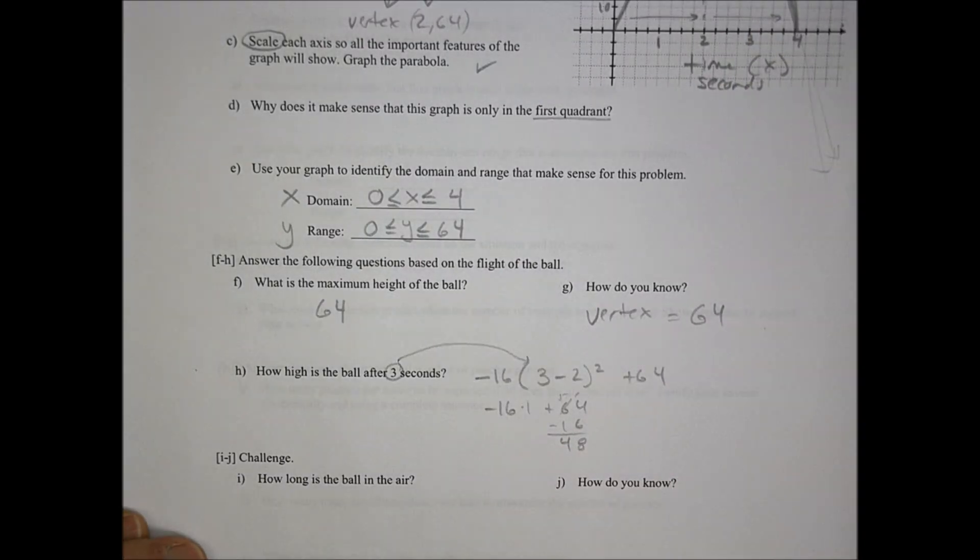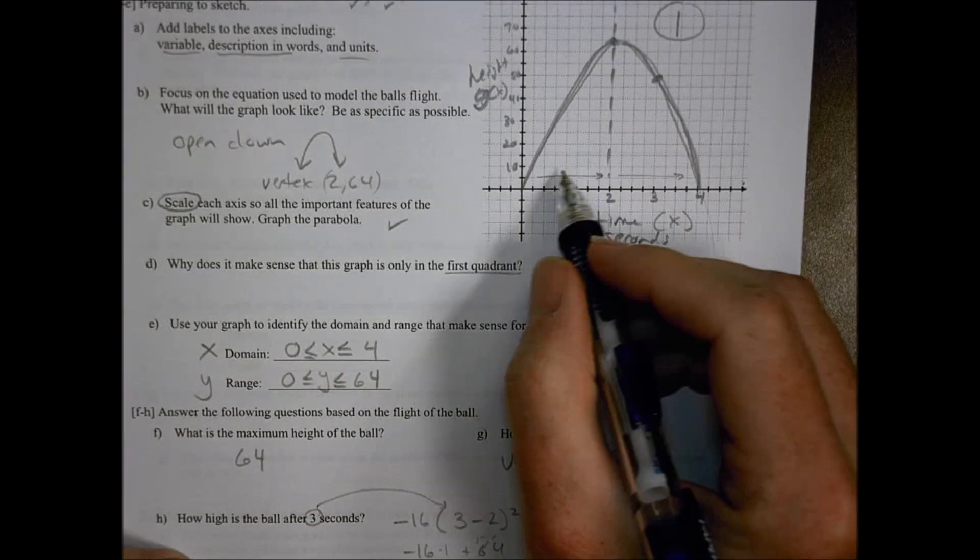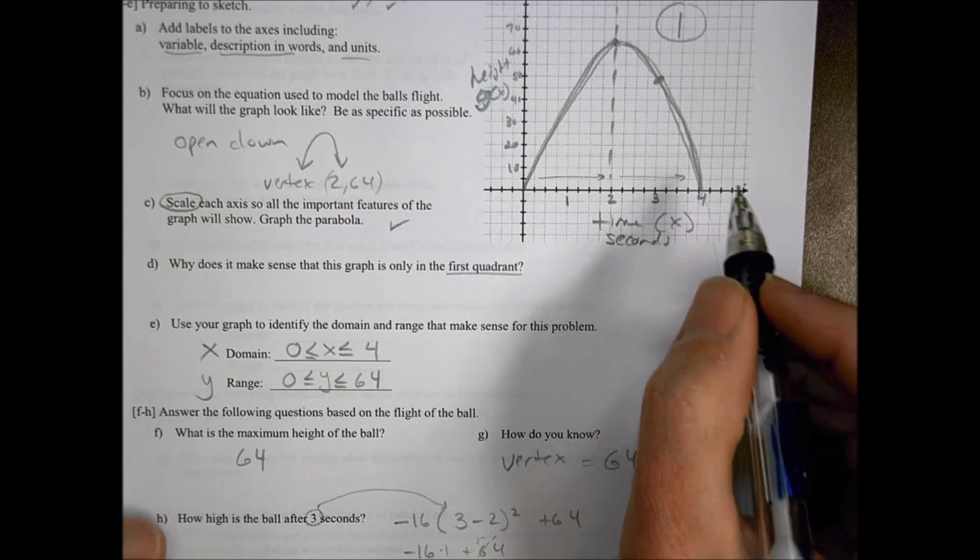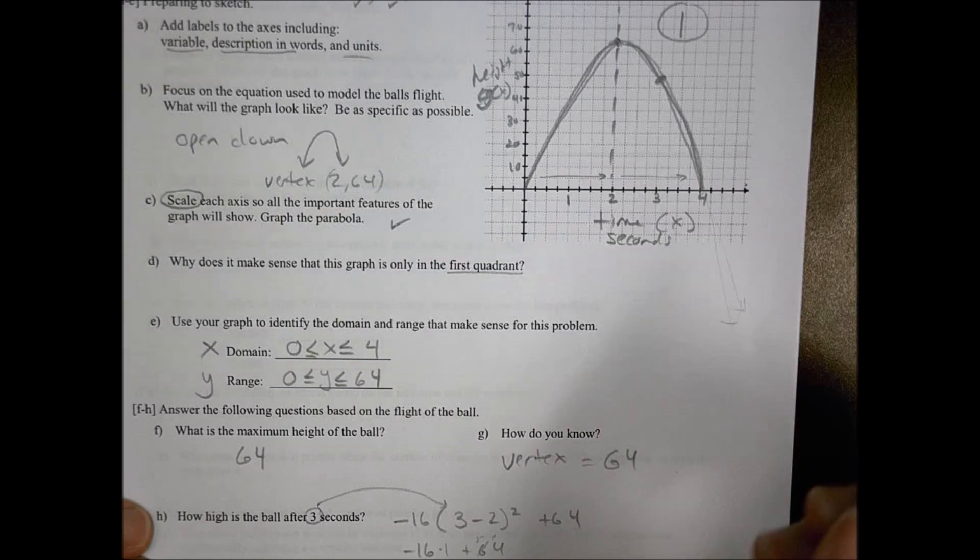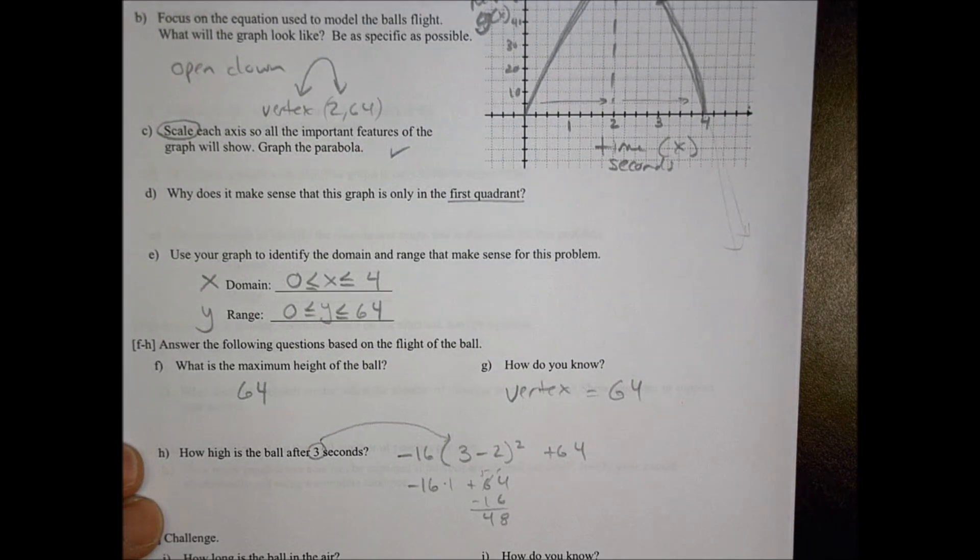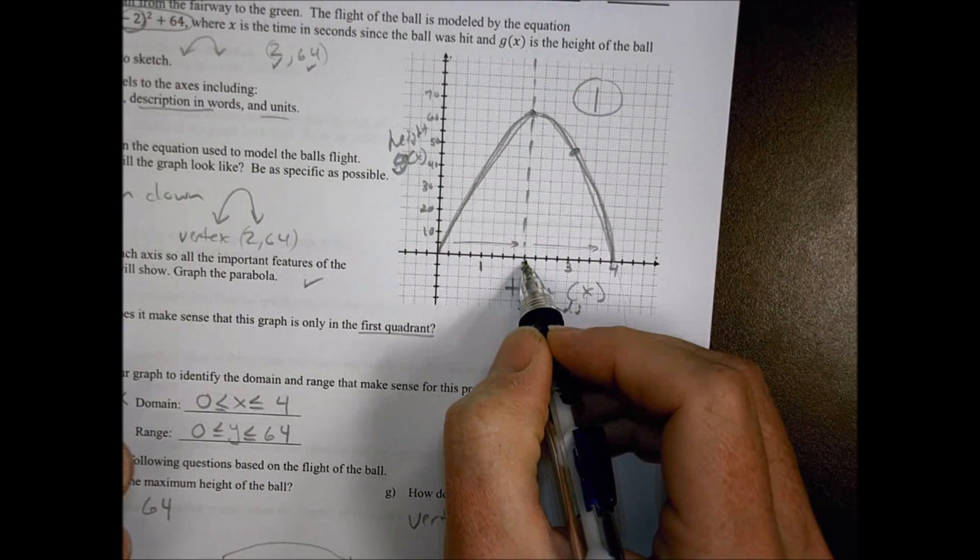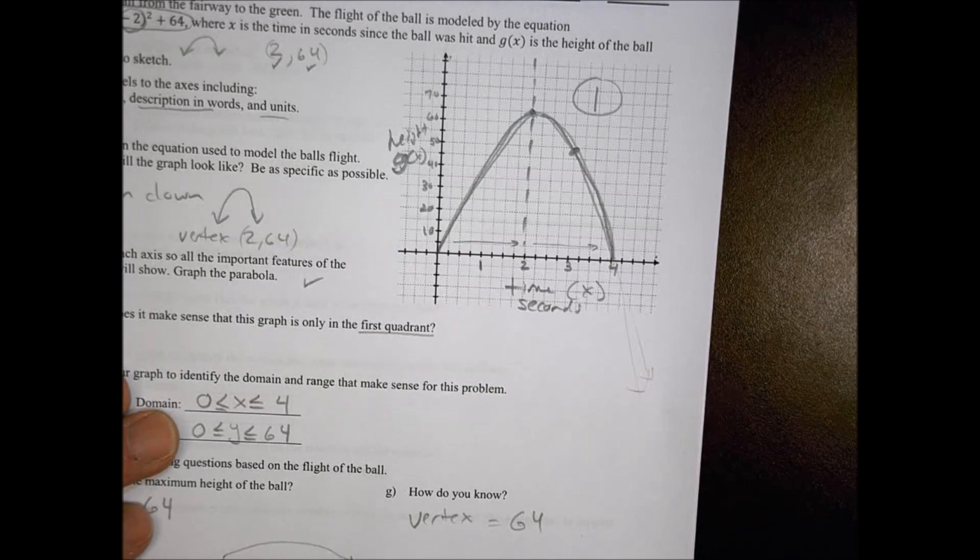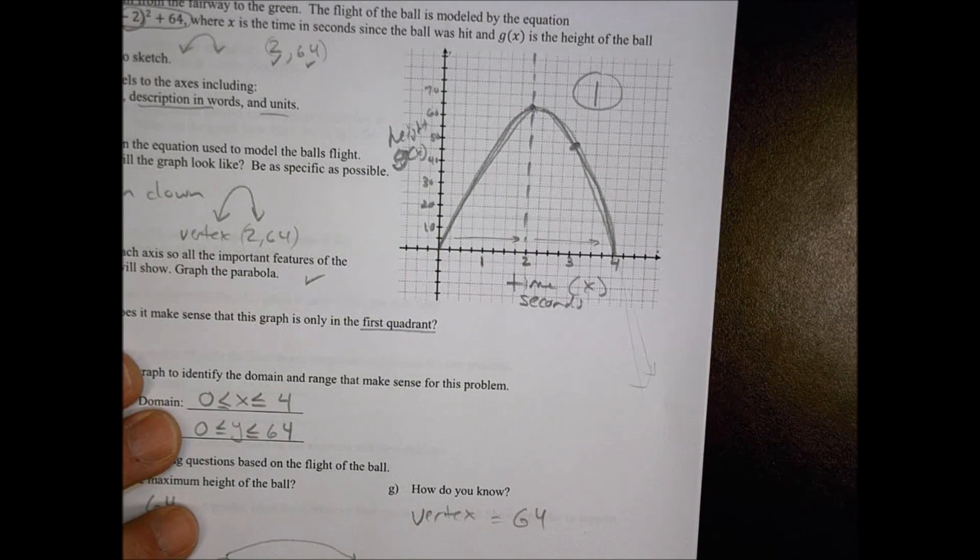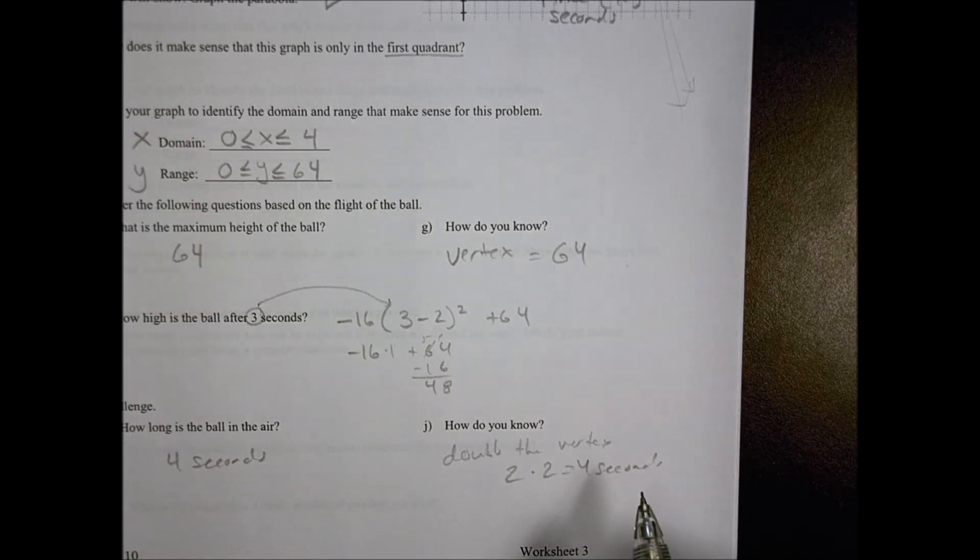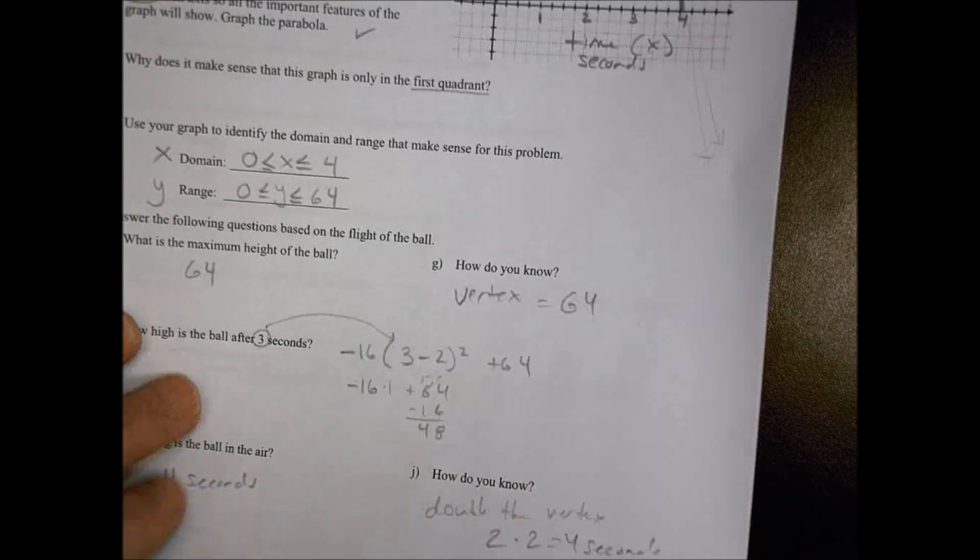How long is the ball in the air? It's in the air from this point to that point. So we would say it's in the air for four seconds. We know because it takes off at zero and gets its height at two and we double that to get to the end point. So we double the vertex, two times two gets you to four.